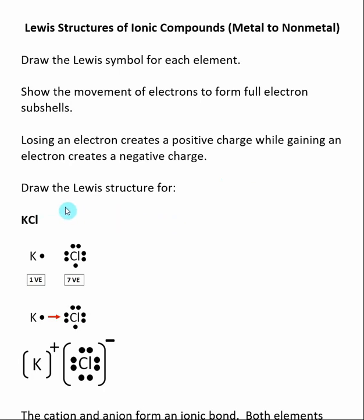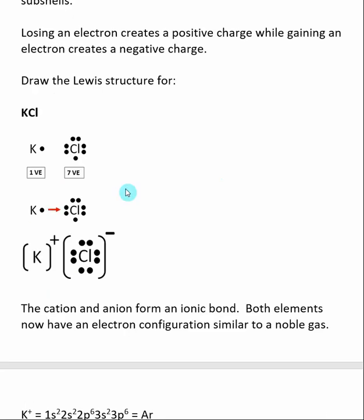So here's an example where I ask for you to draw the Lewis structure for KCl. The first thing you want to do is start with the Lewis symbol for both of these species. Potassium has one valence electron. Chlorine has seven valence electrons. Then you want to move electrons to fulfill the octet of both of these species. So it's very easy to see here with chlorine that if it gains one more electron, it's going to have eight valence electrons.